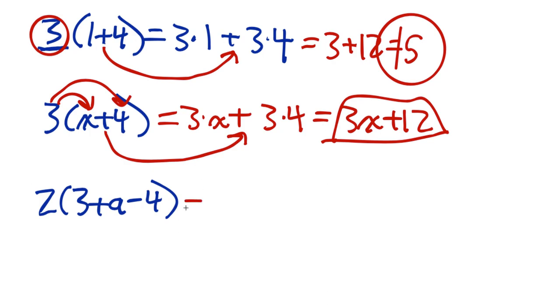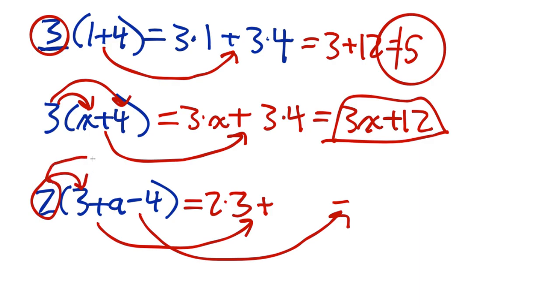Let's do a more complicated version. I'm going to keep the plus sign and the minus sign as is. This plus isn't going to change. This minus isn't going to change. I'm going to distribute the 2 to everything. That's going to be 2 times 3, 2 times the a, and then 2 times the 4.